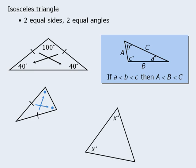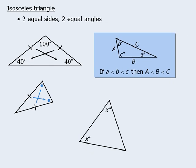What about this isosceles triangle? Here we are told which two angles are equal, and we must determine which two sides are equal. Well, the two sides that are opposite the two equal angles must be equal, so we will denote this as follows.